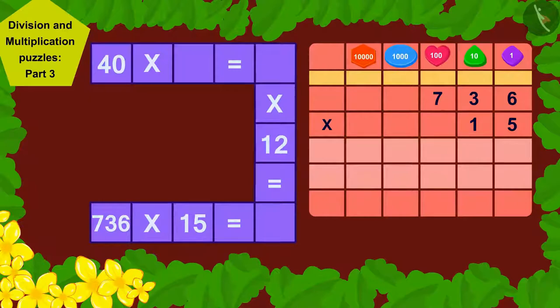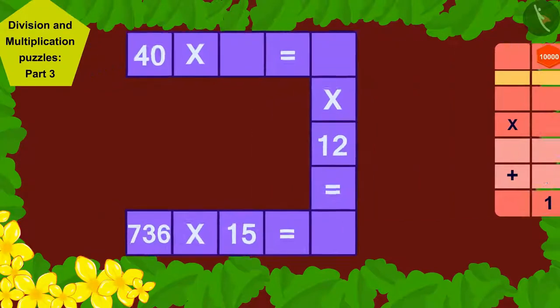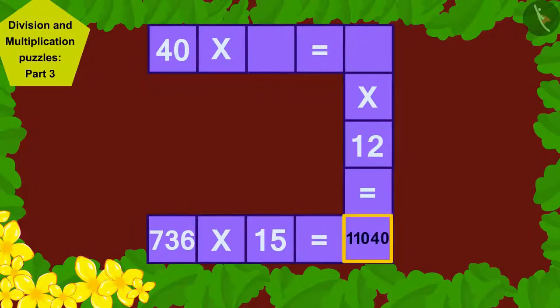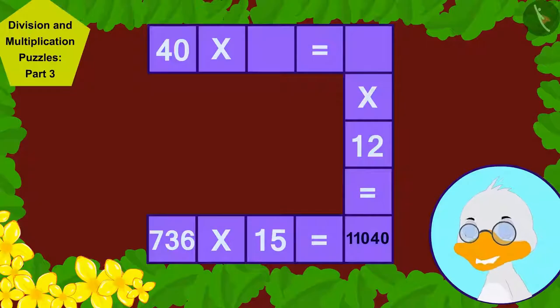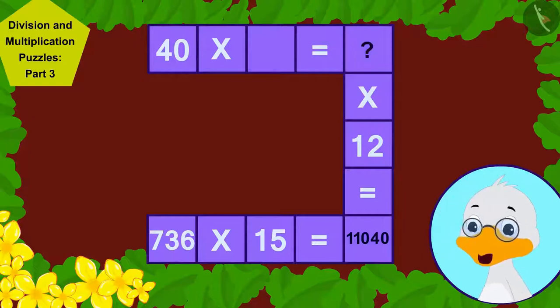Therefore, first I found the answer of 736 times 15 in this way and wrote 11,040 on this blank space. Then, I noticed that as soon as this blank is filled, I have to find the next number,